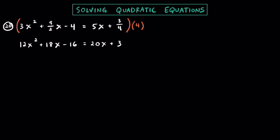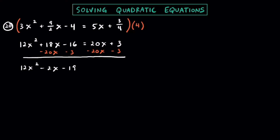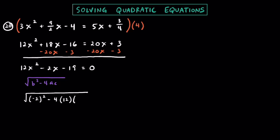Now making everything equal to zero by subtracting 20x and subtracting 3 from both sides: 12x squared minus 2x, and then negative 16 minus 3 is negative 19, equals 0. Finding the discriminant to see if it's factorable: b squared minus 4ac equals negative 2 squared minus 4 times 12 times negative 19. Negative 2 squared is positive 4. Two negatives give a positive, so 4 times 12 is 48, and 48 times 19 is 912. So 4 plus 912 gives 916. Since 916 is not a perfect square, it's not factorable.